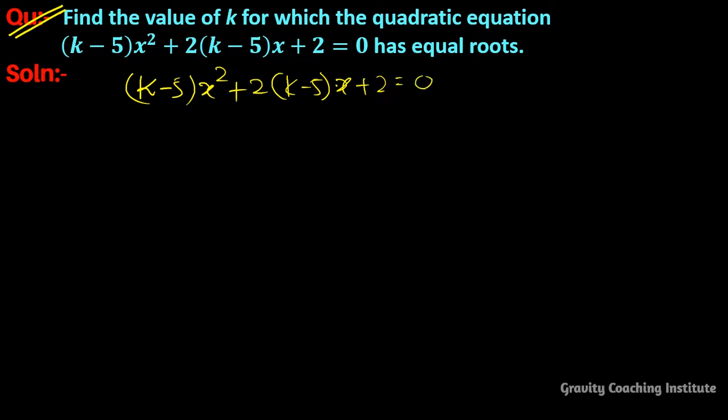We'll compare this equation with the standard quadratic equation ax² + bx + c = 0. Here the value of a is k - 5, b is 2(k - 5), and c equals 2.